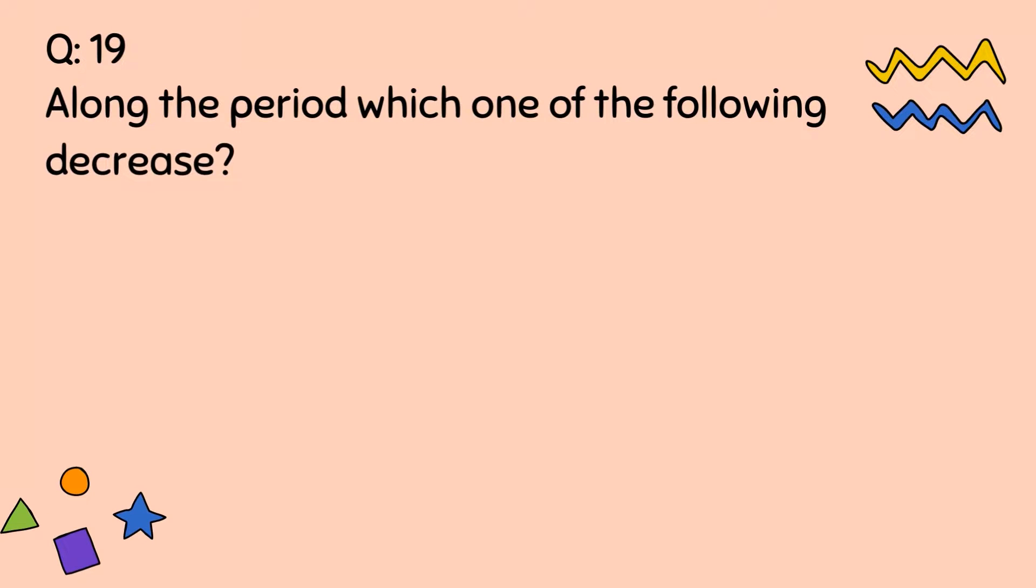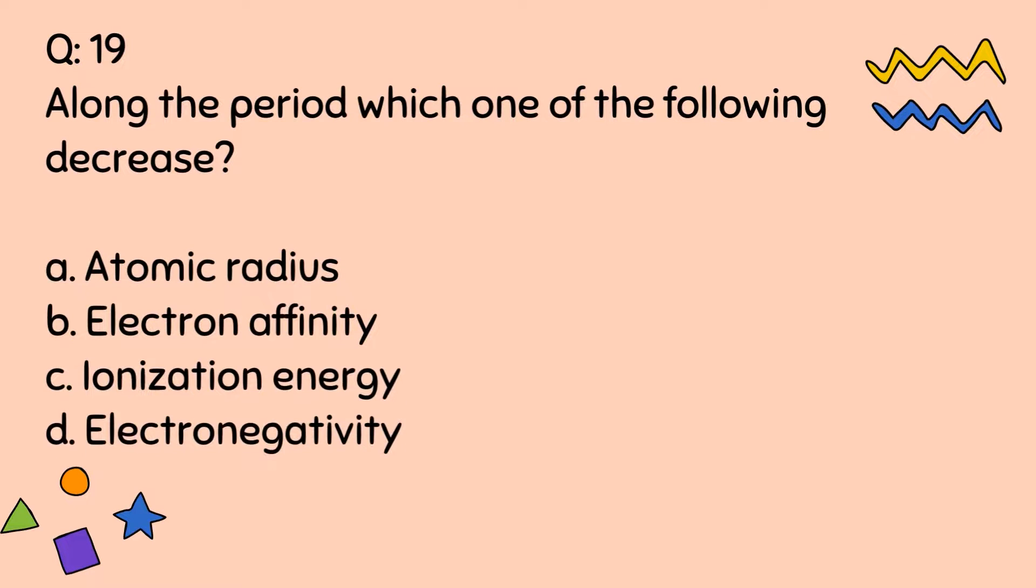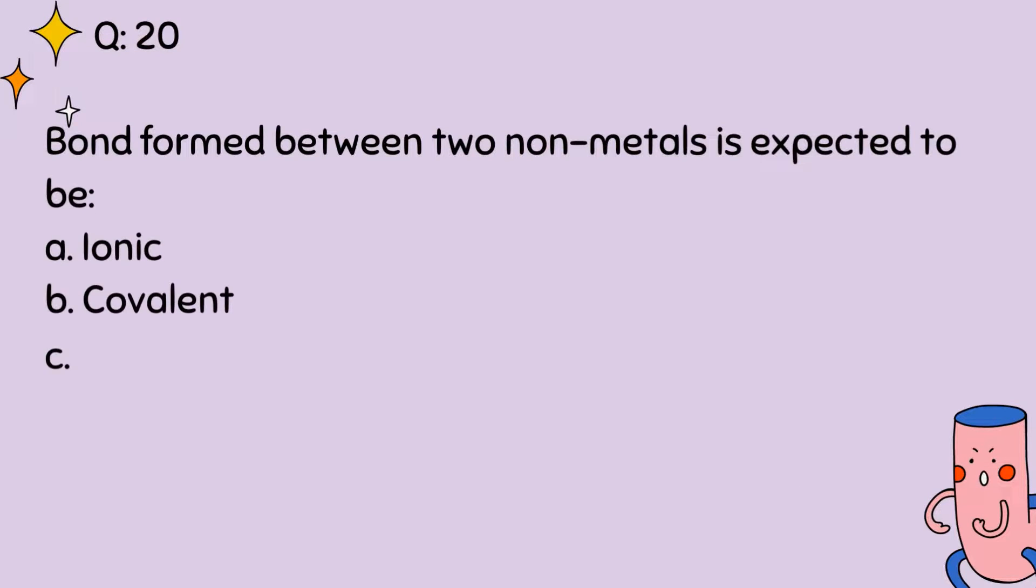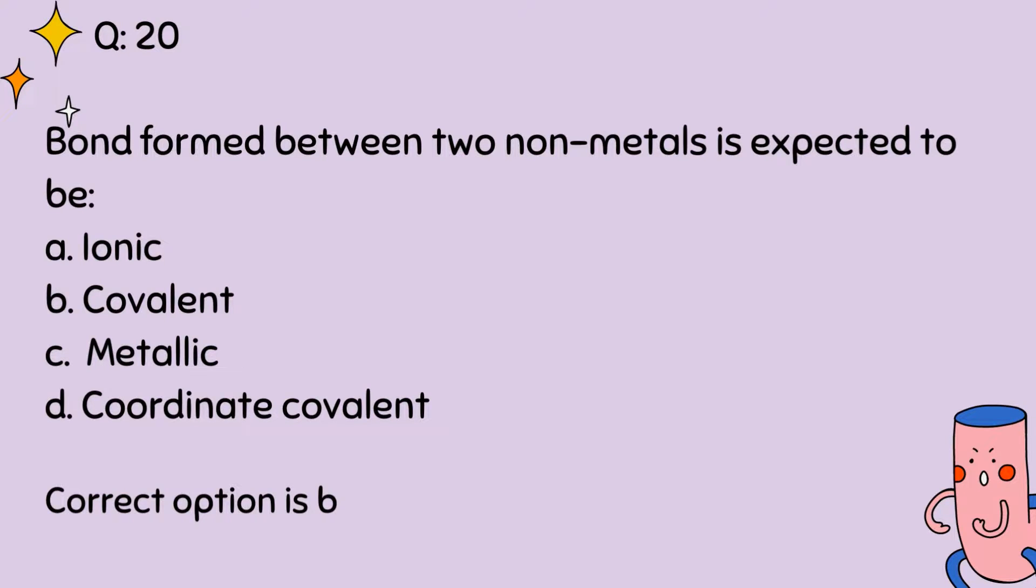Question number 19. Along the period, which one of the following decrease? A, Atomic radius, B, Electron affinity, C, Ionization energy, D, Electronegativity. Correct option is A. Question number 20. Bond formed between two non-metals is expected to be: A, Ionic, B, Covalent, C, Metallic, D, Coordinate covalent. Correct option is B.